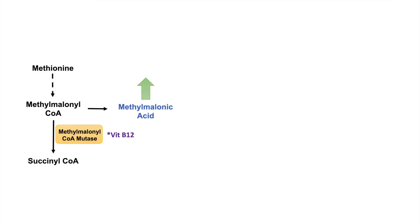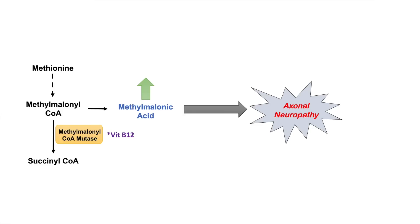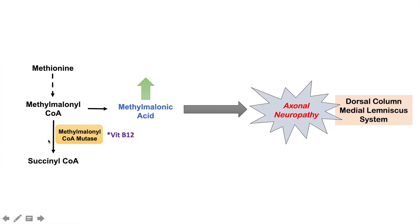Methylmalonic acid is the problem here. It will continue to increase in concentration and leads to axonal neuropathy — it starts to damage neurons in a specific part of the central nervous system: the dorsal column medial lemniscus system (DCMLS). So without vitamin B12, methylmalonyl-CoA mutase fails, methylmalonyl-CoA backs up, methylmalonic acid increases, and this leads to axonal neuropathy in the DCMLS.